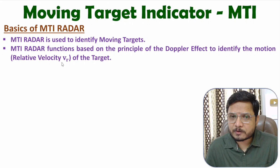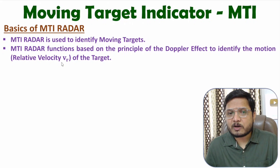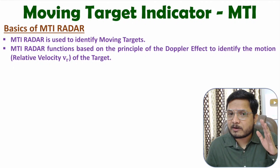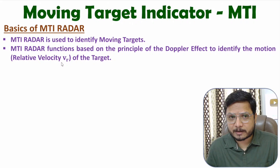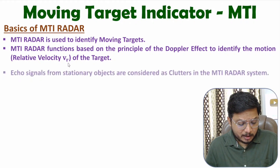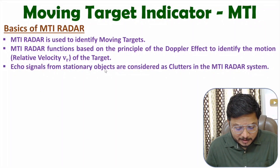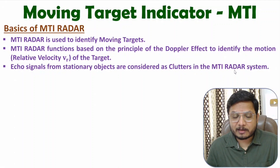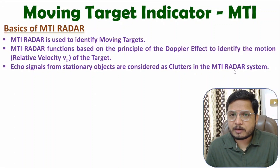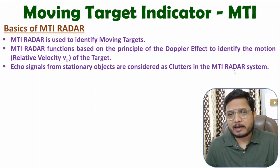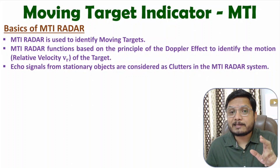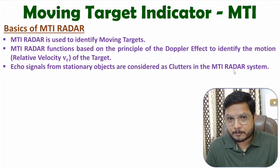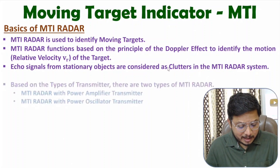With the use of the Doppler effect, there will be a deviation in frequency, and based on that deviation one can identify the relative velocity of an object. Echo signals from stationary objects are considered as clutter in MTI radar system, because MTI is used for moving objects only.